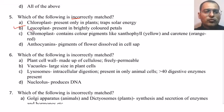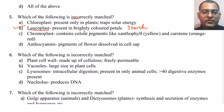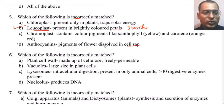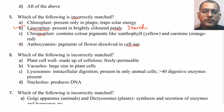The answer is leucoplast. Leucoplast stores starch and is therefore present in, for example, tubers like potatoes — not in the brightly coloured petals of flowers. In petals, pigments may be anthocyanins, which are dissolved in the cell sap, or chromoplast, which contain colour pigments like xanthophyll and carotene. Chloroplast is present in leaves and is involved in trapping solar energy for photosynthesis.